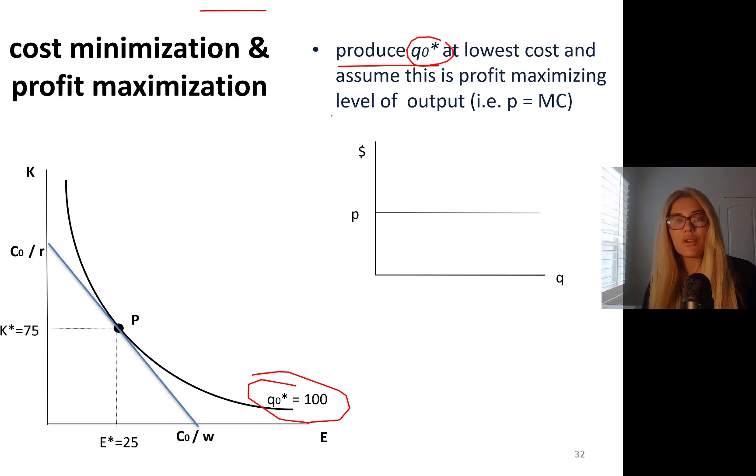You basically got it from Principles of Micro class: quantity and price. We have marginal revenue. This is the demand curve. For a perfectly competitive company, price, which is also equal to the demand curve.